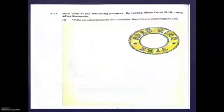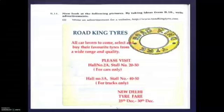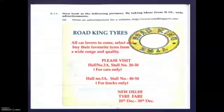Now on the next page, B11: look at the following pictures and, taking ideas from B10, write advertisements. Write an advertisement for a website — the address given is for 'Road King Tires.' First, the heading: 'Road King Tires.' Then write: 'All car lovers to come, select and buy their favorite tires from a wide range and quality.' Then: 'Please visit Hall Number 2A, Stall Number 20 to 30 for cars only; Hall Number 5A, Stall Number 40 to 50 for trucks only. New Delhi Tire Fair, 25th to 30th December.'